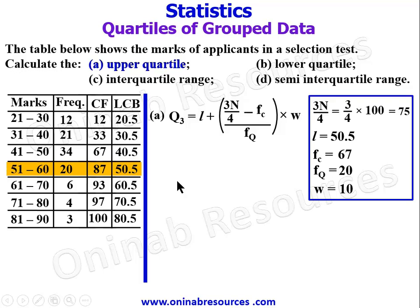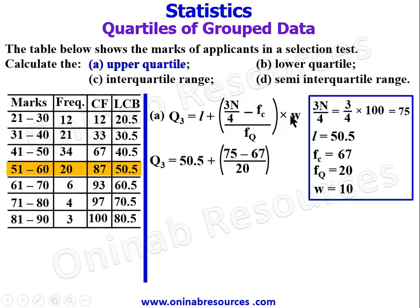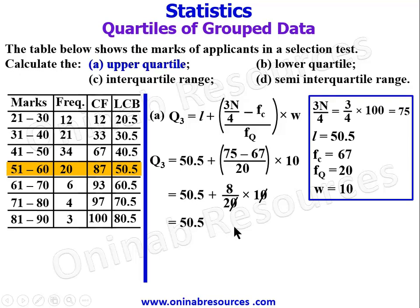Now we substitute into the formula: Q3 equals 50.5 plus (75 minus 67) over 20, multiplied by 10. That gives 50.5 plus 8 over 20 times 10. Cancelling the zeros, 8 divided by 2 gives 4. So Q3 equals 50.5 plus 4, which gives 54.5. That represents the upper quartile of this distribution.